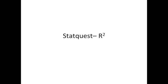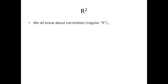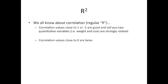R-squared is a metric of correlation that is easy to compute and intuitive to interpret. Most of us are already familiar with correlation and the standard metric of it, plain old R. Correlation values that are close to 1 or negative 1 are good and tell you that two quantitative variables — for example, weight and size — are strongly related. Correlation values close to 0 are lame.